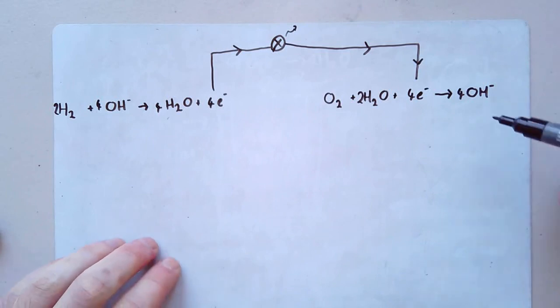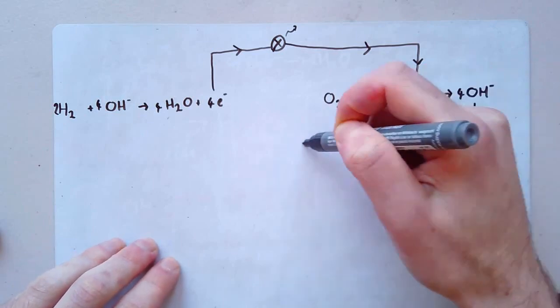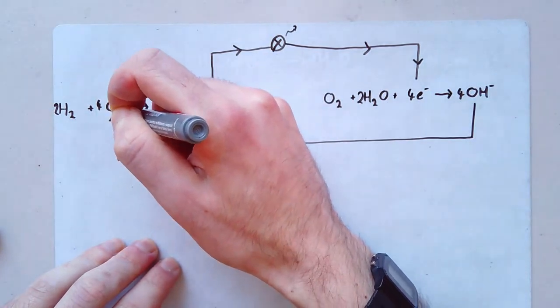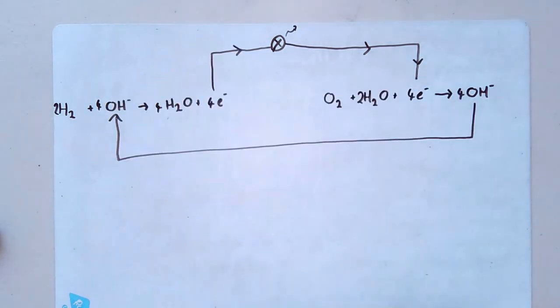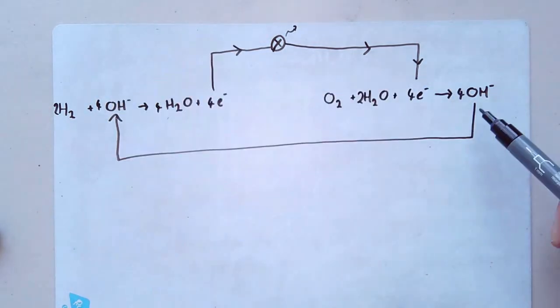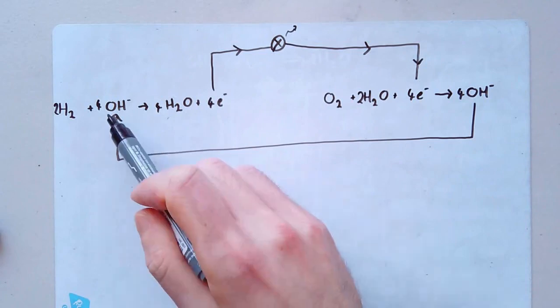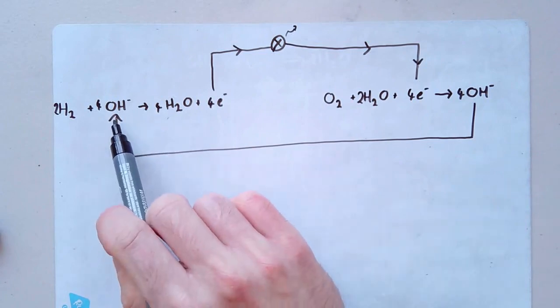This OH minus here gets recycled and goes over there. So the OH minus from here comes down, goes through the cells. Remember the electrolyte was OH minus. So this OH minus travels through the electrolyte and it goes over there. So overall, there's no change in the amount of OH minus. It gets used up here, but then produced over there.